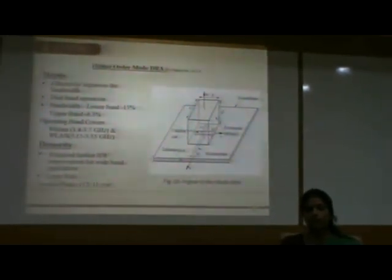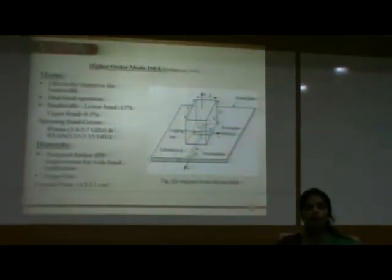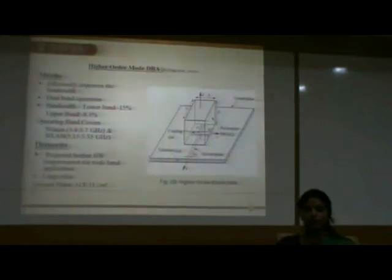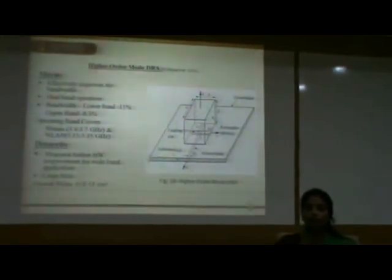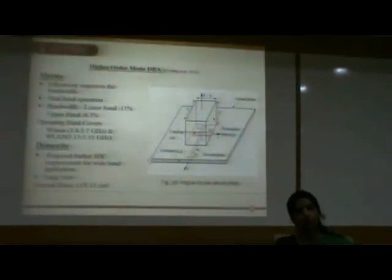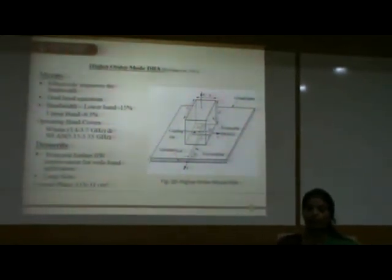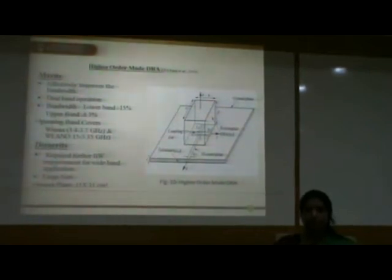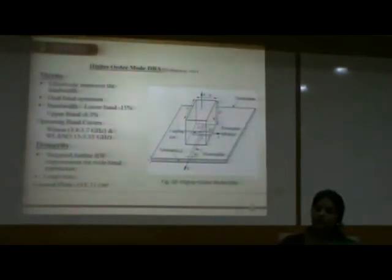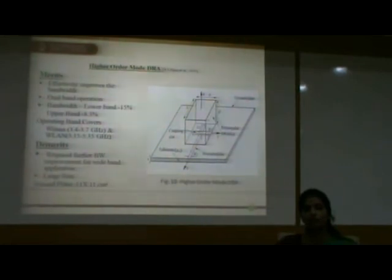This method was recently proposed in 2011. In this method, dual-band operation is obtained due to higher order modes. The bandwidth in the lower band is 15%, obtained due to the TE111 mode. In the upper band, bandwidth is about 8.3%, due to the next higher order mode, TE113. The operating bands covered in this design are WiMAX and WLAN. The demerit of this antenna design is that it uses a larger ground plane of 11×11 cm, and bandwidth improvement is still required for wideband applications.